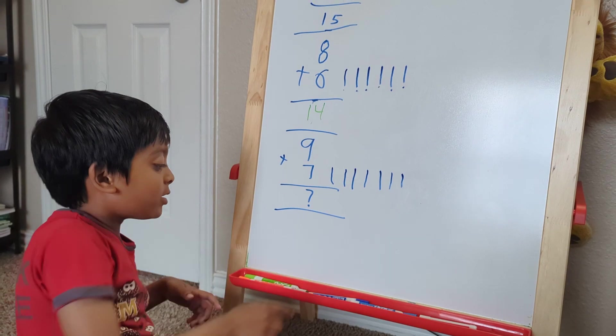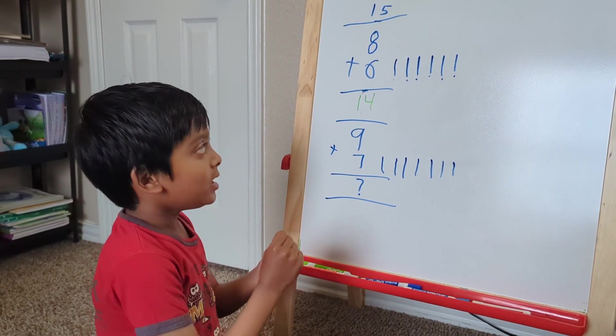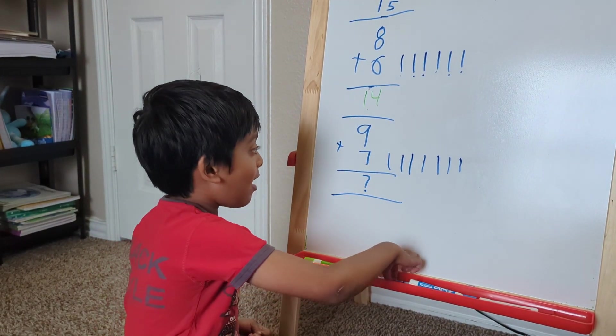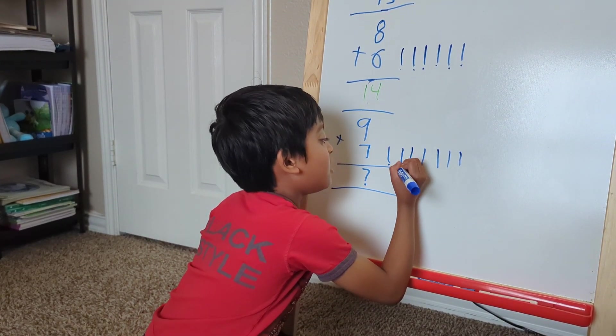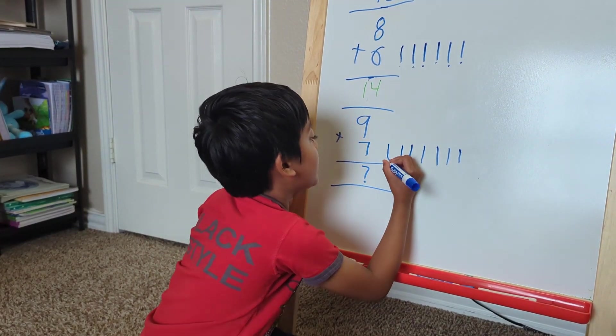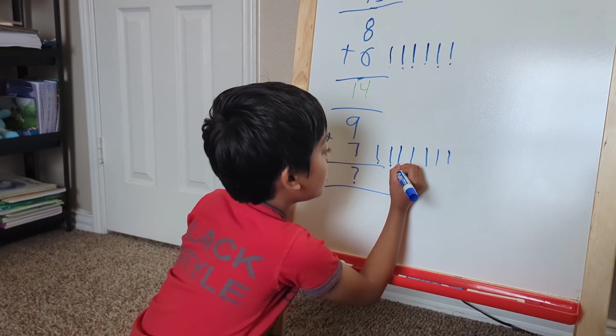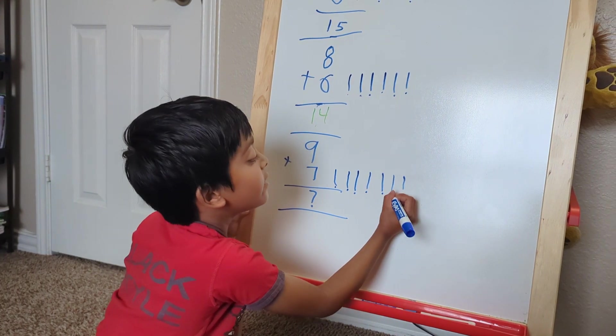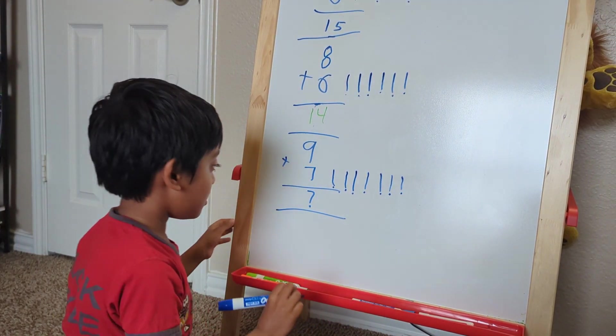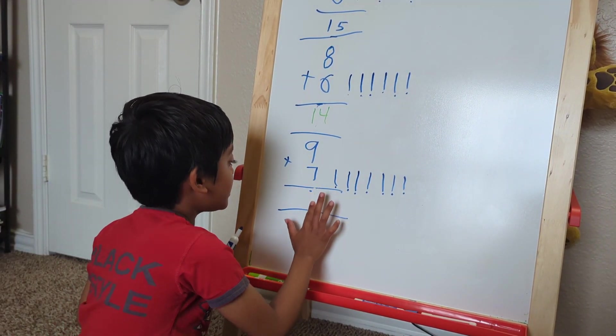here is 9, so let's count after it. Okay, now it is 10. Count with me. 10, 11, 12, 13, 14, 15, 16. So the answer is 16.